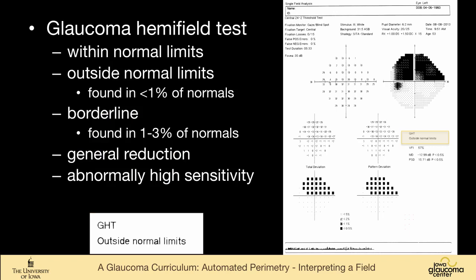The options for hemifield tests are within normal limits, outside normal limits, like in our patient, meaning that this would occur in less than 1% of normals, borderline would occur in 1 to 3% of normals, general reduction in sensitivity, or abnormally high sensitivity are the choices.